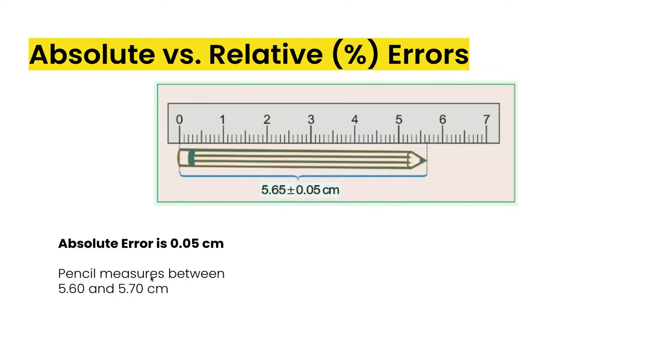So that's why our uncertainty is plus or minus 0.05, we would say the absolute error for this measurement is 0.05 centimeters. So what this really means is it's giving us the range of how big this pencil is. The pencil is measuring between 5.60 and 5.70 centimeters.